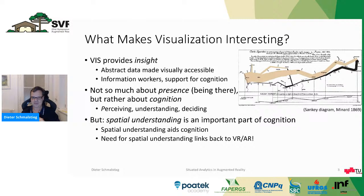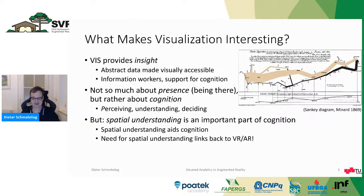Visualization takes abstract data and gives it meaning, making it understandable. Unlike virtual reality, which is a lot about presence — the feeling of being there in virtual space — here we are more interested in supporting human cognition: we want humans to perceive, understand, and make decisions. Spatial understanding is an important part of this cognition. We are spatial animals and we like diagrams where the general trajectory is like on a map, while the width of the line encodes something else — both spatial understanding and abstract data. This need for spatial understanding is what brings us back to virtual reality and augmented reality.